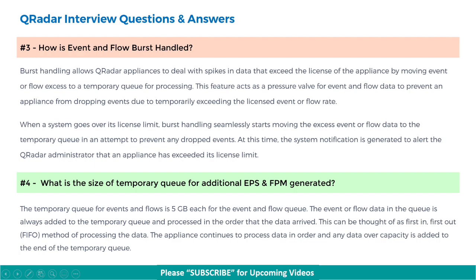Next, how is event and flow burst handled? Burst handling allows QRadar appliances to deal with spikes in data that exceed the license of the appliance, by moving event or flow excess to a temporary queue for processing. This feature acts as a pressure valve to prevent an appliance from dropping events due to temporarily exceeding the licensed event or flow rate. When a system goes over its license limit, burst handling seamlessly moves the excess data to the temporary queue, and a system notification is generated to alert the QRadar administrator.